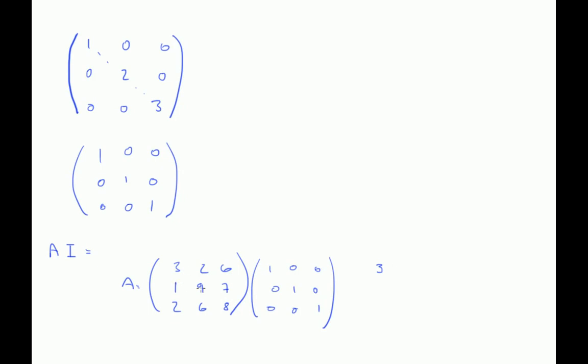Similarly, for this value here, this row times this column, one times one is one, nine times zero is zero, seven times zero is zero.